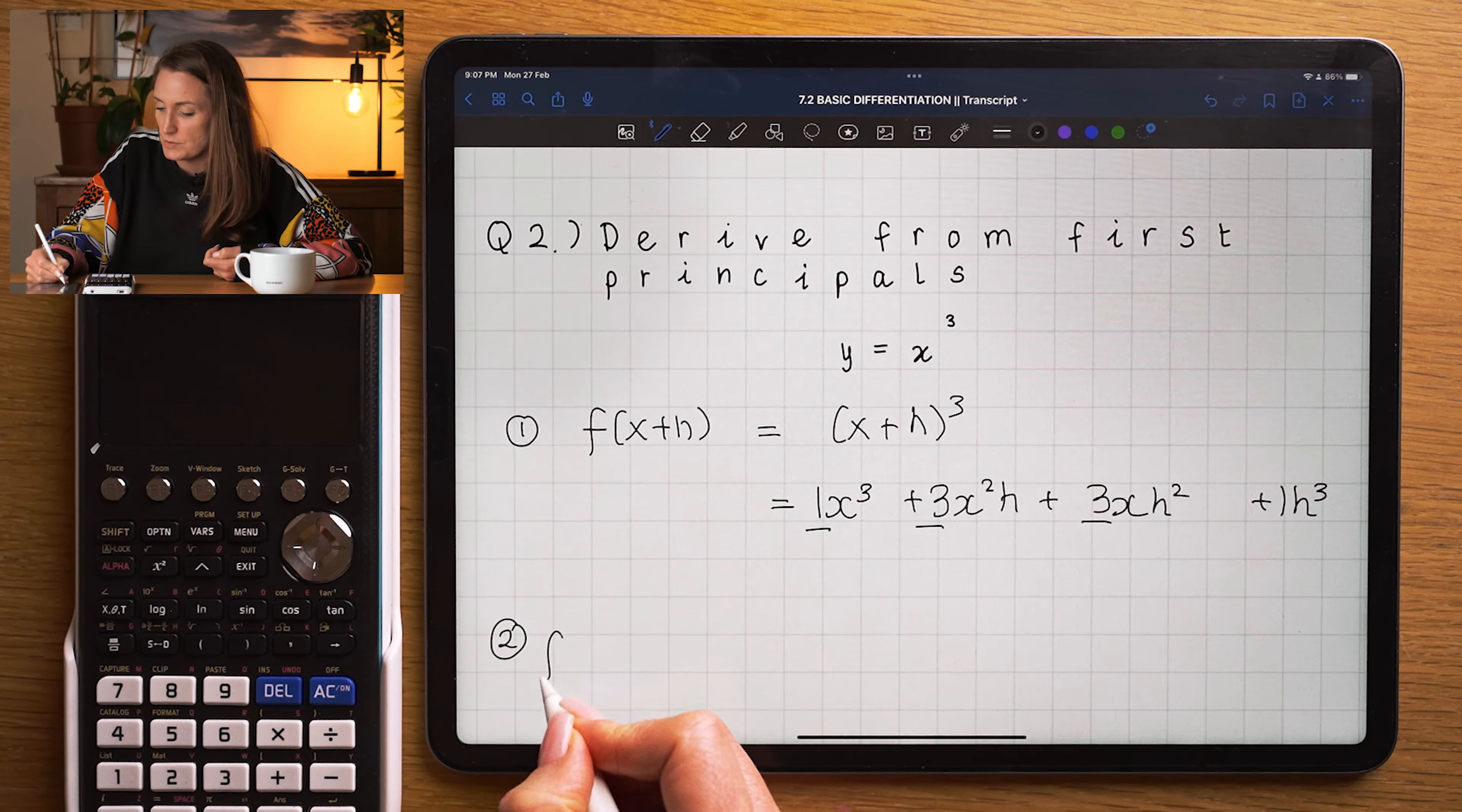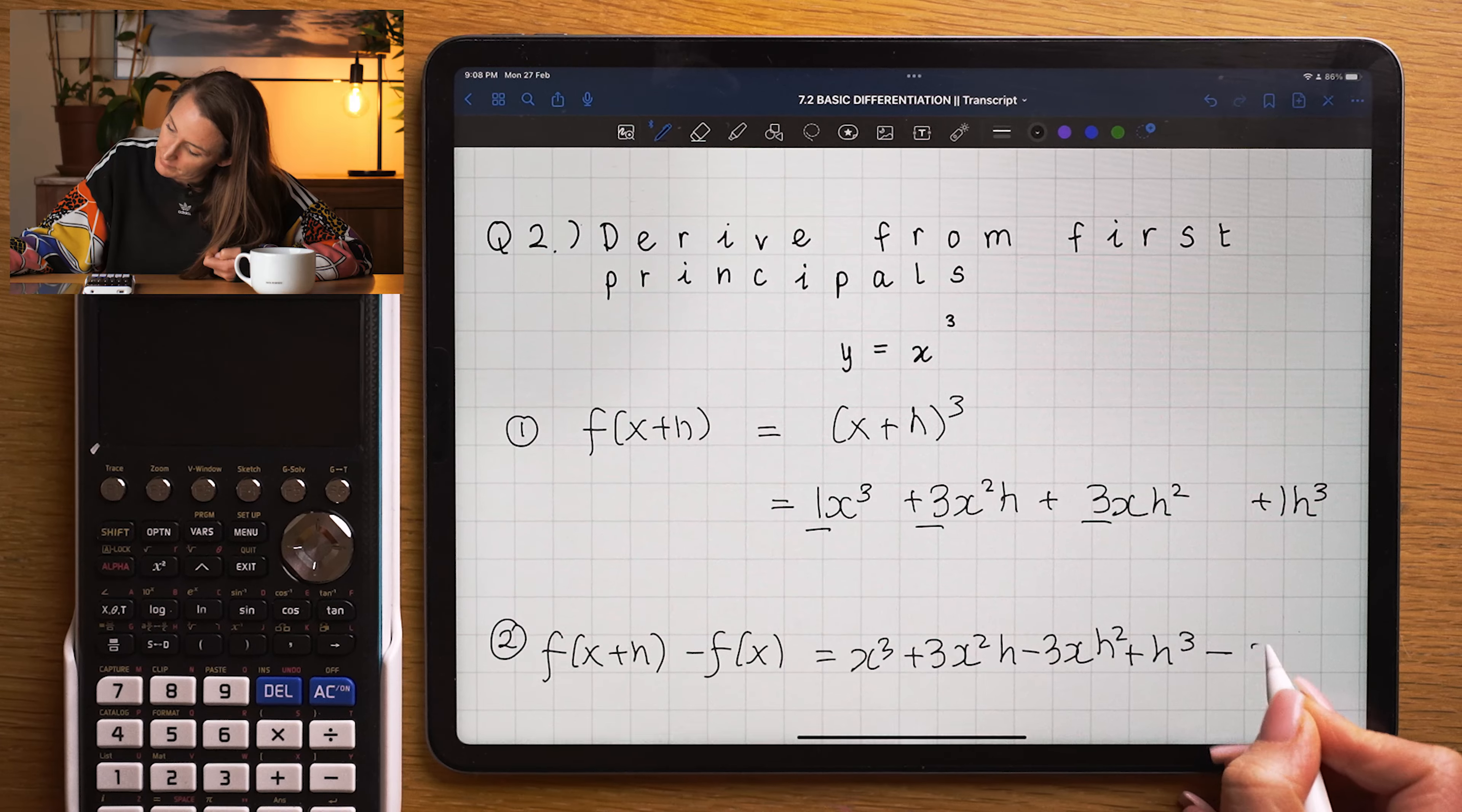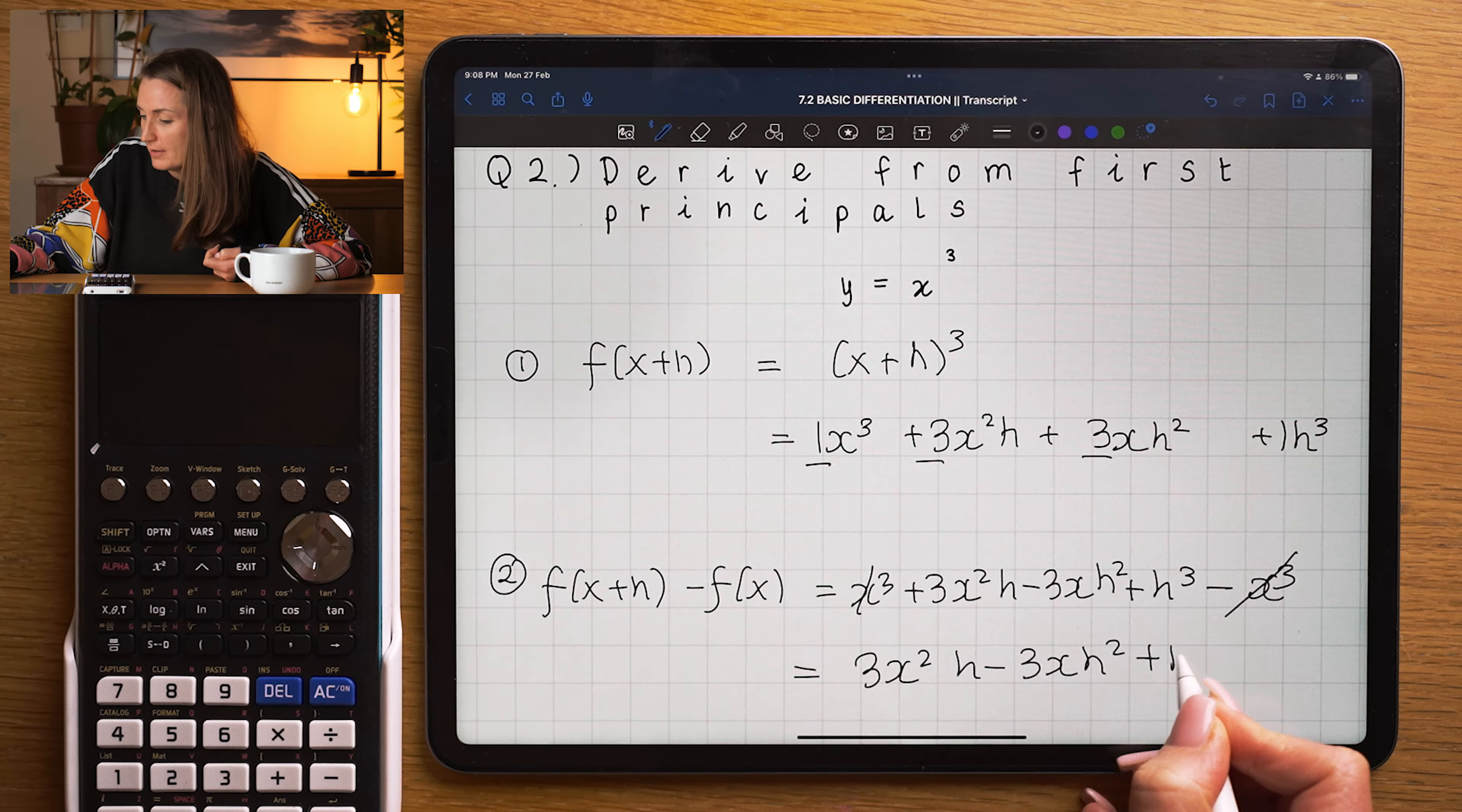I'm going to, in step two, subtract f of x from that expression. And that and that will cancel and I'll be left with 3x squared h minus 3x h squared plus h cubed.